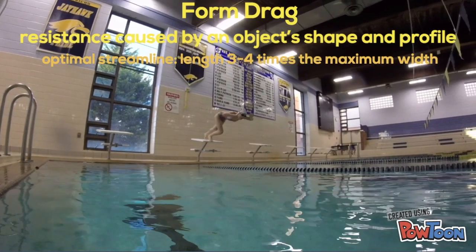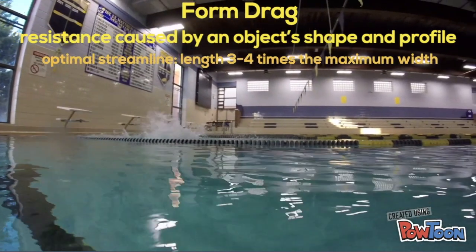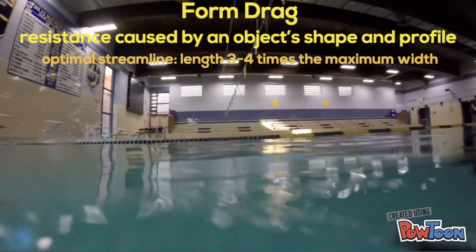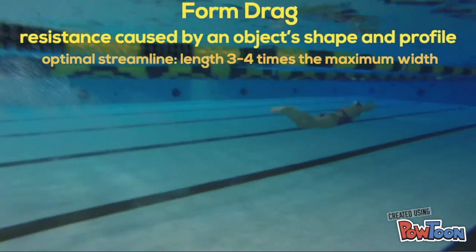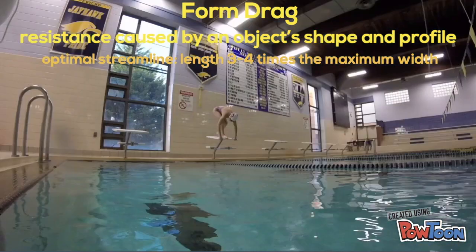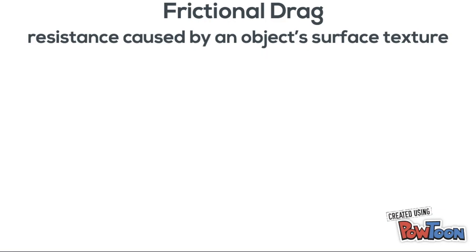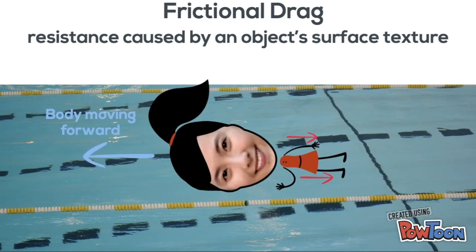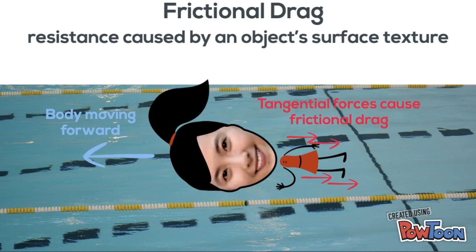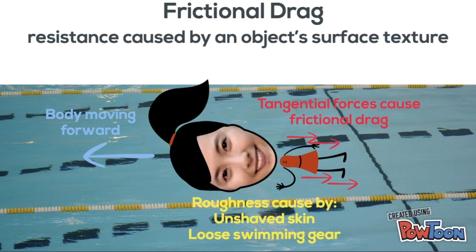Form drag is caused by an object's shape. Generally, a streamlined body, which poses less surface area, has less frontal resistance and form drag than a body with hands spread out. Frictional drag is caused by an object's surface texture. Tangential forces that result from a fluid flowing over an object cause this friction, and thus rough surfaces, such as an unshaved body or a loose swimsuit, invite greater frictional drag.